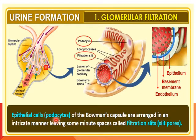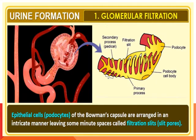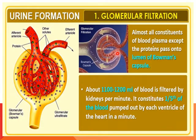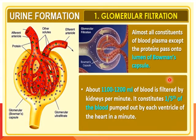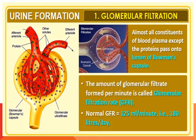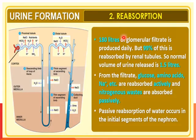The epithelial cells, called podocytes, of Bowman's capsule are arranged in an intricate manner leaving minute spaces called filtration slits or slit pores. Almost all constituents of blood plasma except proteins pass into the lumen of Bowman's capsule. About 1100 to 1200 ml of blood is filtered by the kidney per minute, constituting one-fifth of the blood pumped out by each ventricle per minute. The amount of filtrate formed per minute is called the glomerular filtration rate, and the normal GFR is 125 ml per minute or 180 liters per day.